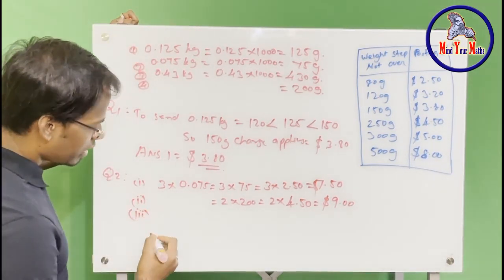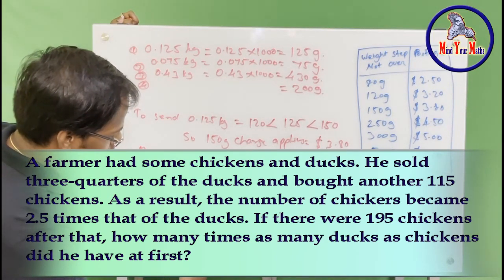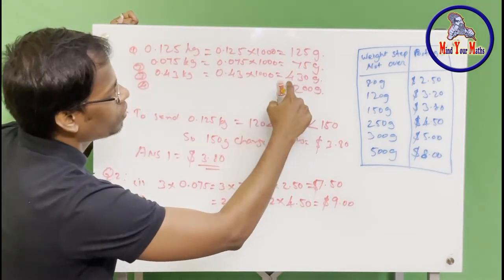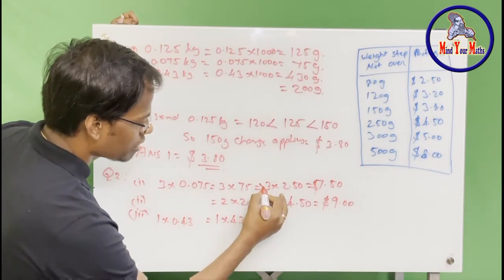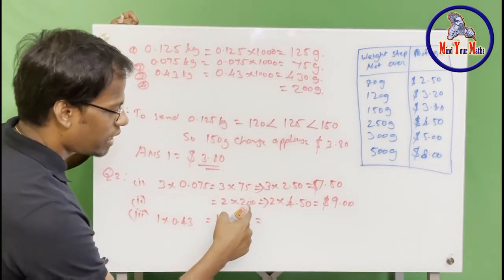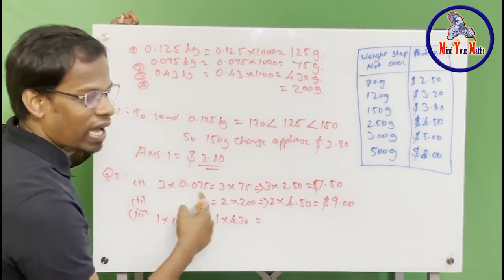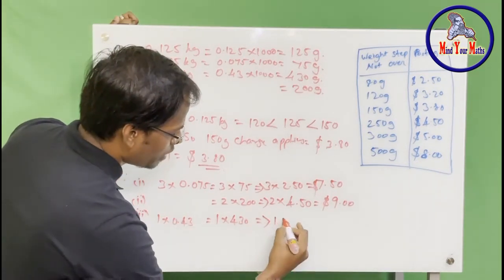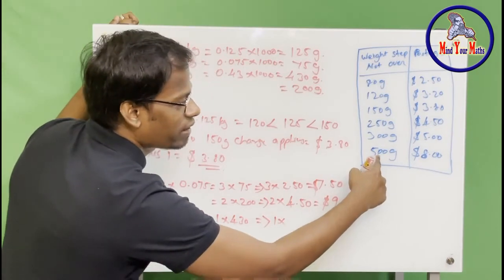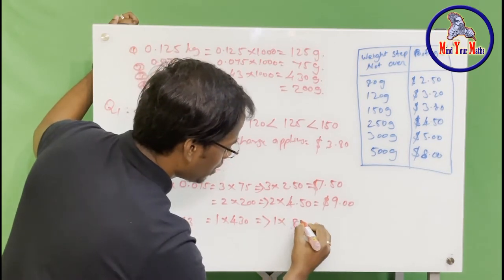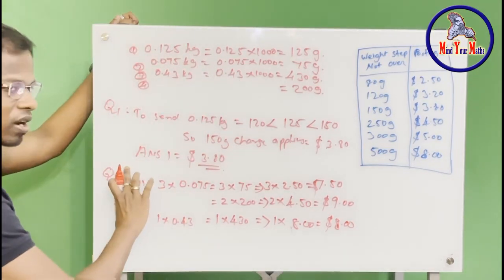The third parcel is one parcel of 0.43 kilograms, which equals 430 grams. For 430 grams — it is more than 300 but less than 500, so we go for the 500 gram charge, which is eight dollars. One times eight dollars equals eight dollars. Now we need to find the total charge for all three types of parcels.